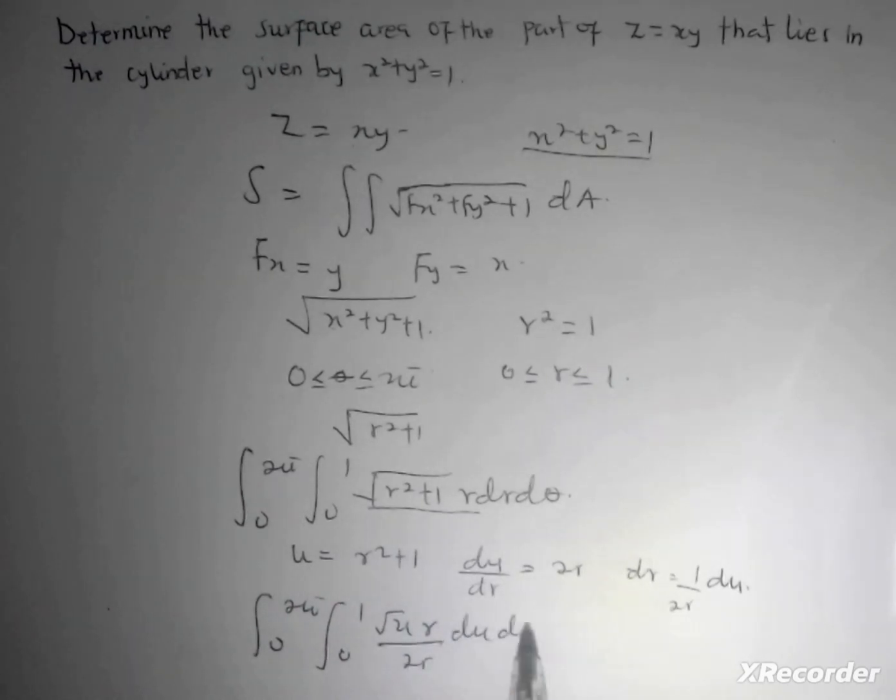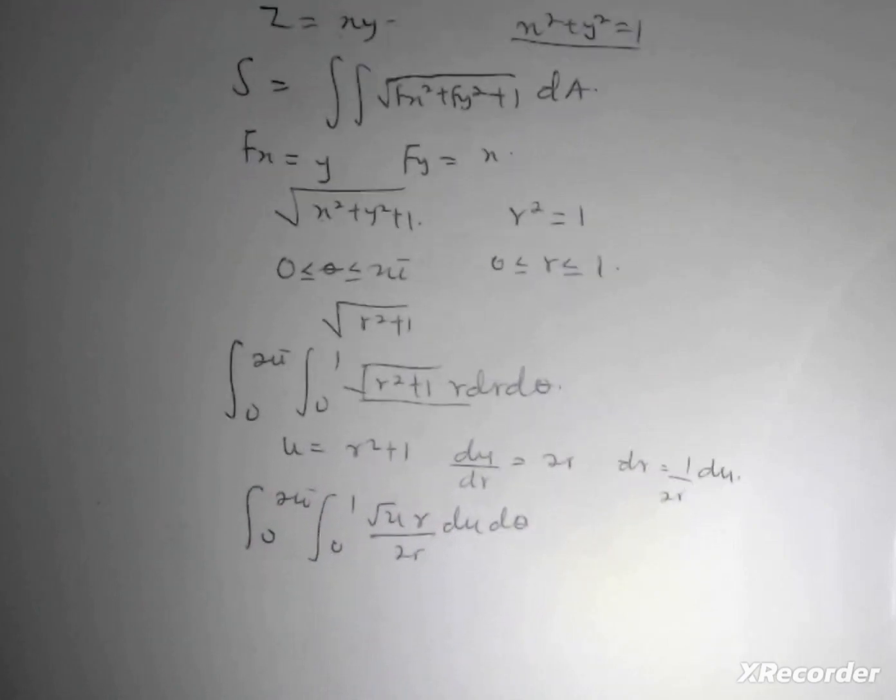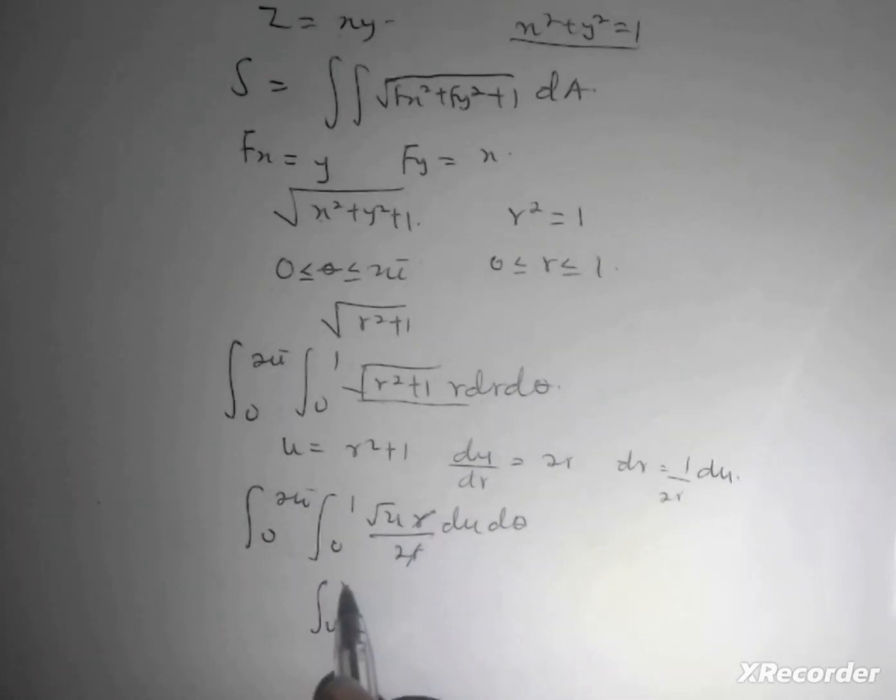Now all the r is represented by u, so the r's cancel. I'll get the integral from 0 to 2π, then integral from 0 to 1 of u^(1/2) / 2 du dθ.